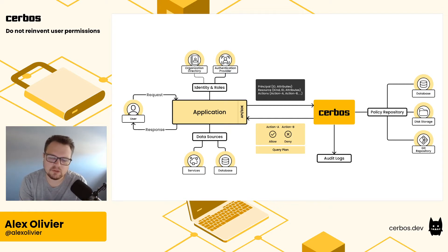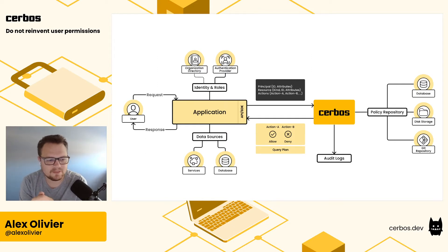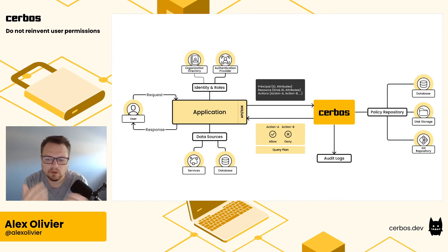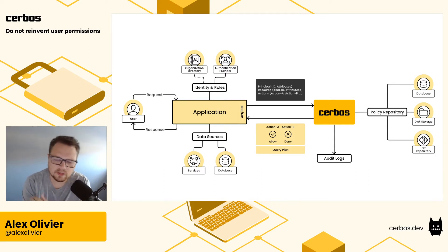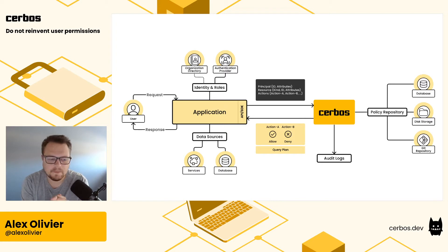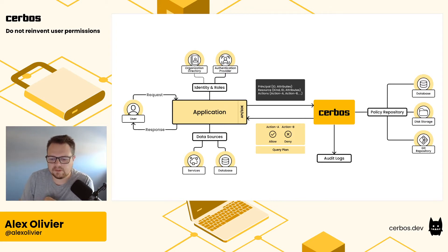The second thing you'll generally know about the request is the resource they're trying to access. You might have a known set of URLs and a request handler, or there's some attribute about the incoming request that tells you what the user is trying to access. And you can go and fetch from your data sources — be it your own database, some external service, or an API — the information about the particular resource that user is trying to access.